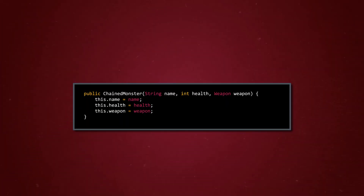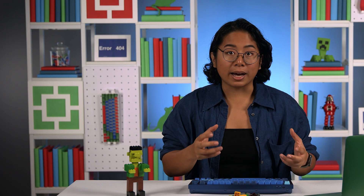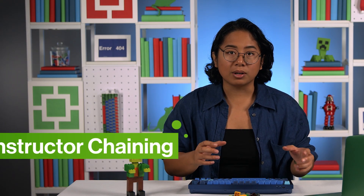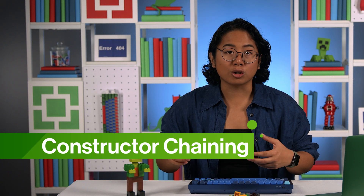We already built a regular constructor for the monster class that takes three parameters, and we need all three to create each new monster object. Let's call this the 3Param constructor, or 3PC for short. Java has a special mechanism we can use to create another constructor that connects to the 3PC. Through this mechanism, called constructor chaining, we can build another constructor to automatically initialize a monster object's starting health. Specifically, we can code a 2PC, or 2Param constructor, with a few minor changes to the parameters. The 2PC will rely on the 3PC, which is responsible for instantiating a new class object. So in programmer jargon, we say that the 2PC invokes the 3PC.